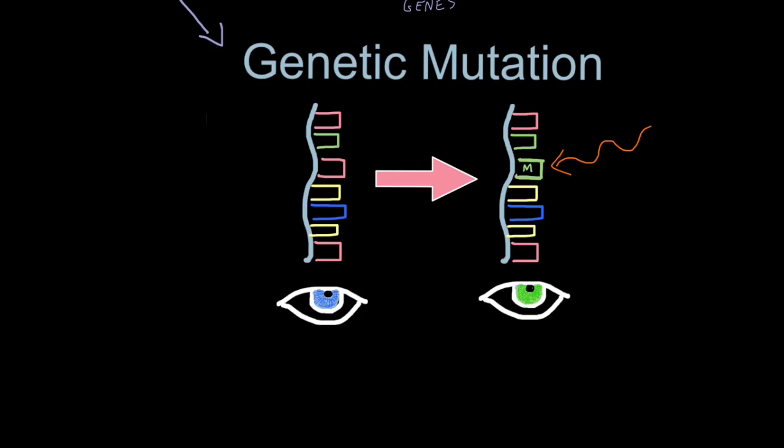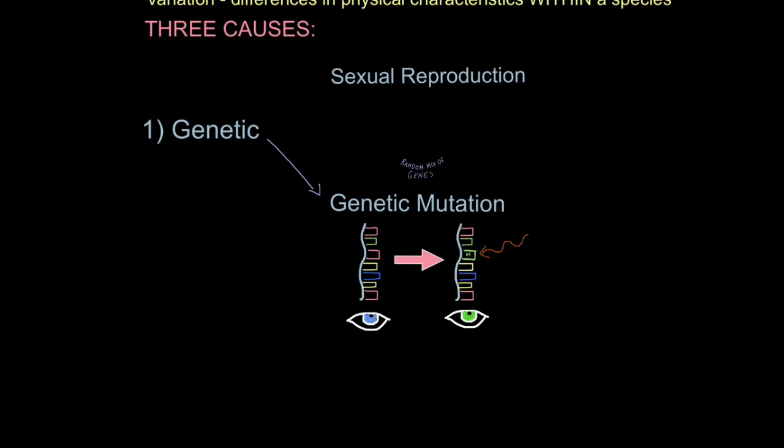The result is the base sequence of DNA changes, and that in turn can change the characteristic coded for. So you can see the mutation has resulted in the offspring which inherits that mutation, developing green eyes. So once again, genetics is a source of variation, either through sexual reproduction or genetic mutation.